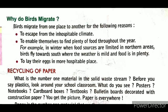Why do birds migrate? Birds migrate ek place se doosre place par because of the following reasons. First, to escape from inhospitable climate — harsh climate se apne aap ko bachane ke liye. Second, to find plenty of food throughout the year. For example, in winters when food sources are limited in northern areas, birds fly towards the south where weather is mild and food is plentiful. Third, to lay their eggs in a more hospitable place.